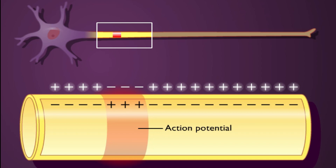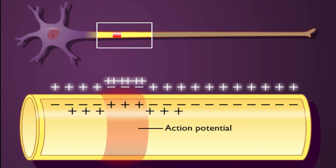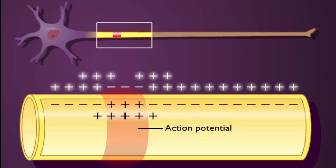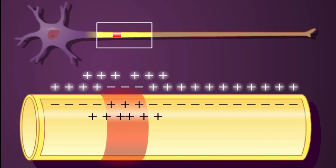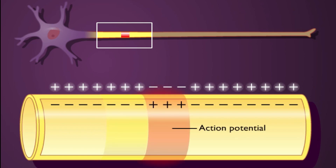An action potential generates local currents that tend to depolarize the membrane immediately adjacent to the action potential. When depolarization caused by the local currents reaches threshold, a new action potential is produced adjacent to the original one.